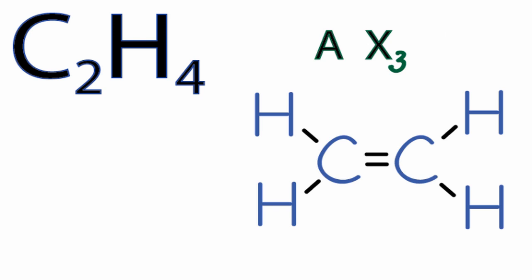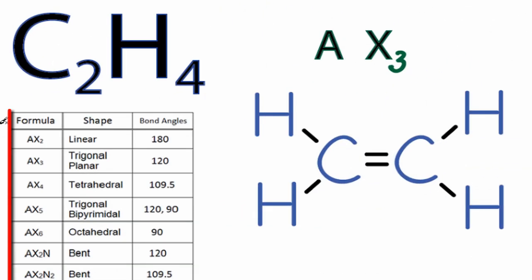You could have memorized that AX3 is trigonal planar, or you could look it up on a table. Going down the table, we're looking for AX3. We have AX2, and right below it is AX3, which is trigonal planar.